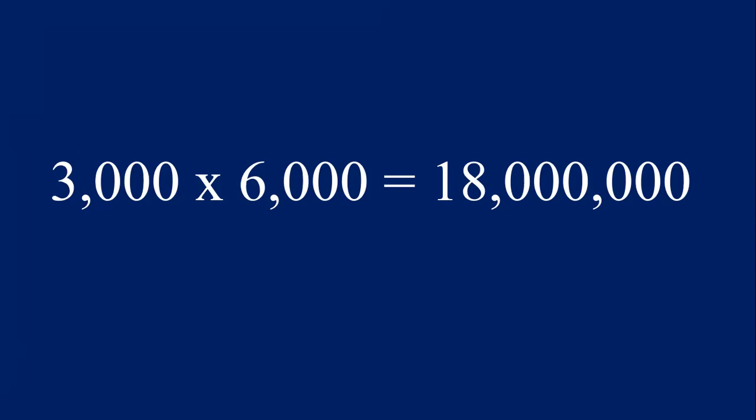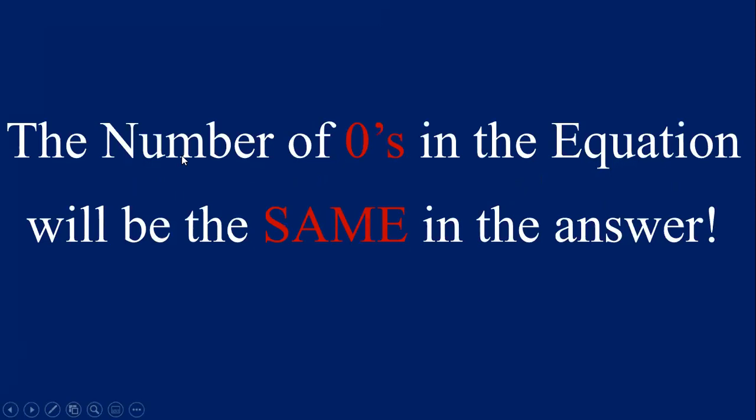It's really a very simple strategy. All we have to do is multiply the numbers that are not zero first, and then count the zeros, because the number of zeros in the equation will be the same as the number of zeros in the answer. Let me say that again: the number of zeros in the equation will be the same as the number of zeros in the answer.